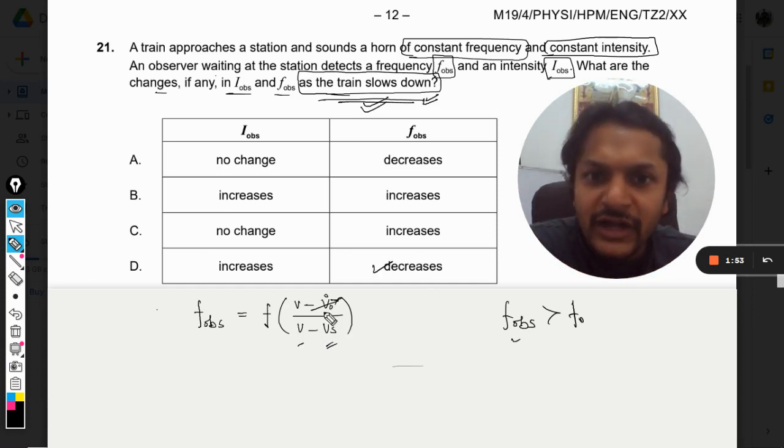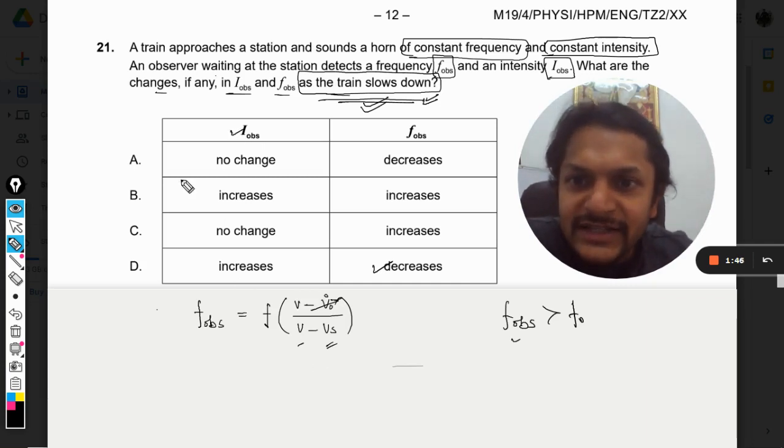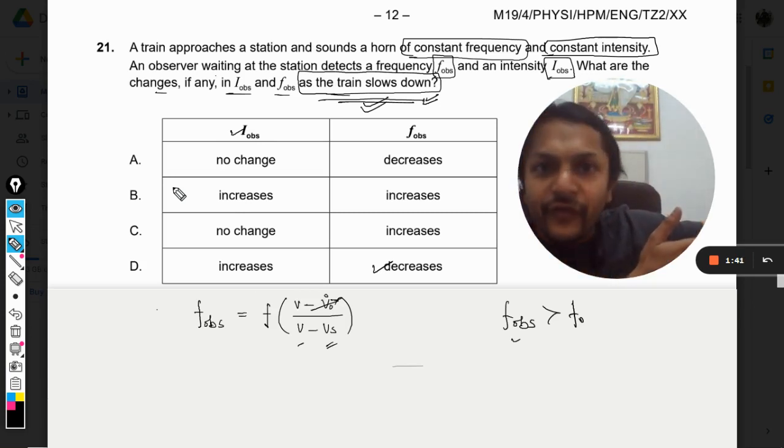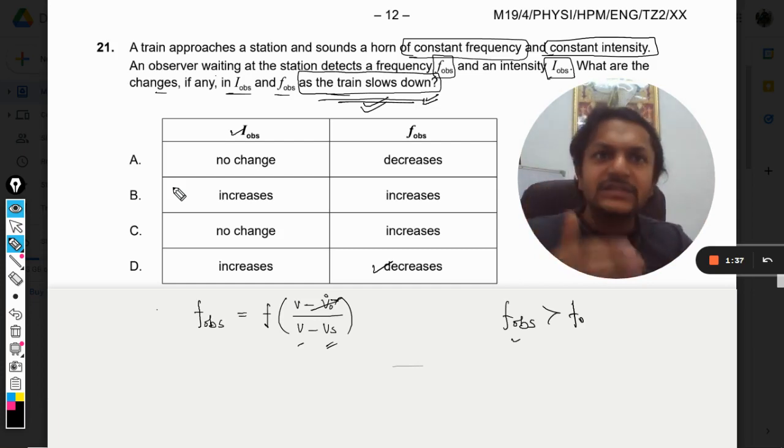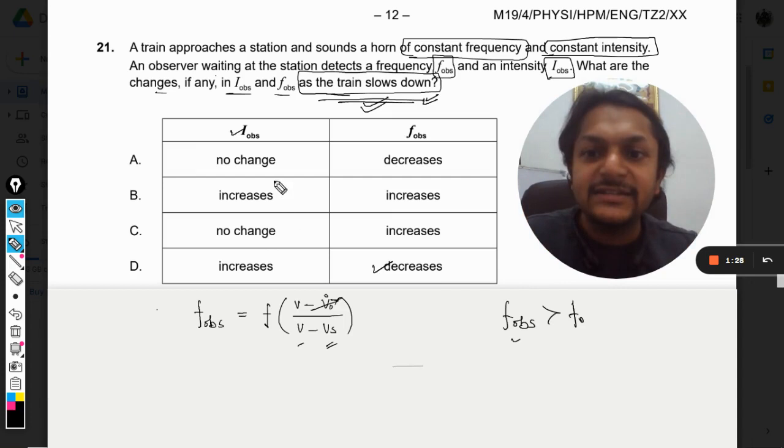So our answer will be this. Now what about the intensity? Intensity: because earlier the train was very far away, obviously the sound was not that loud, but once the train is in front of me on the railway station, at that time it is just in front of me and the honking is so much louder that I will say yes, the intensity is increasing. So our answer will be D.